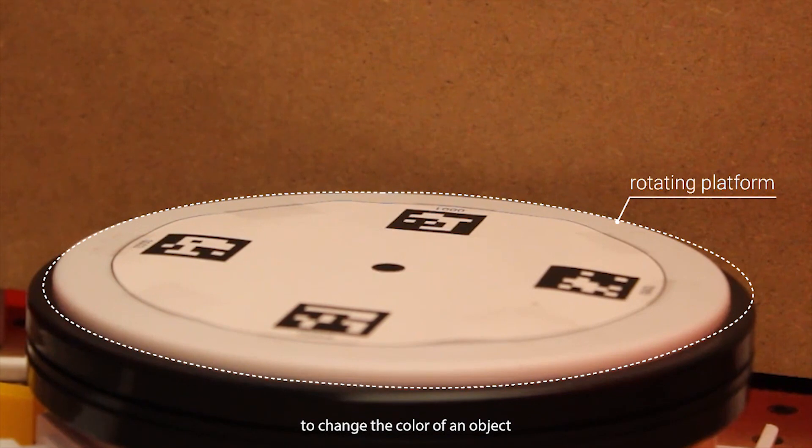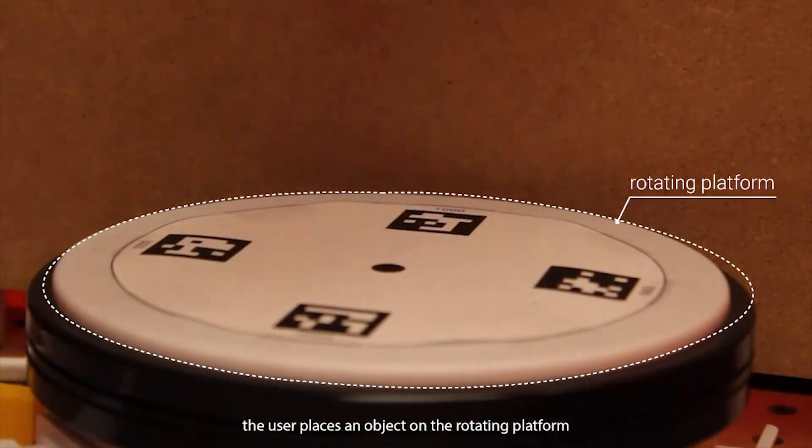To change the color of an object, the user places an object on the rotating platform.